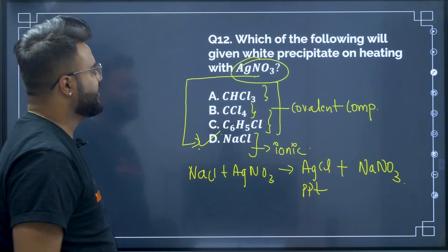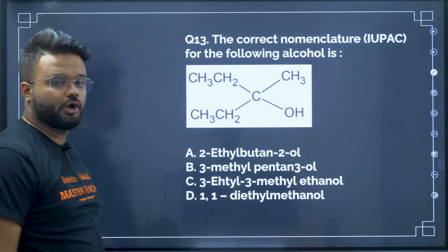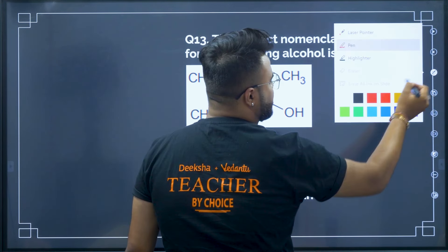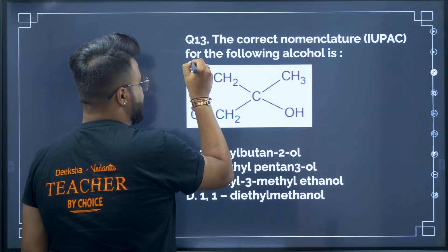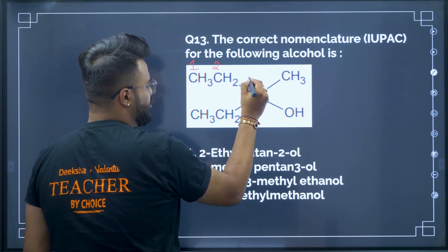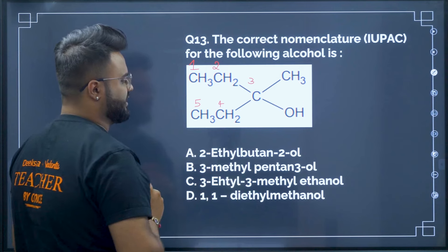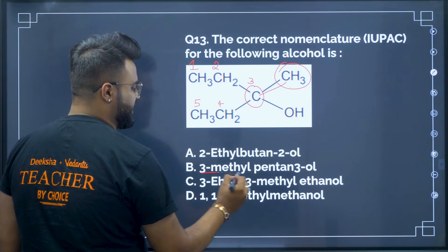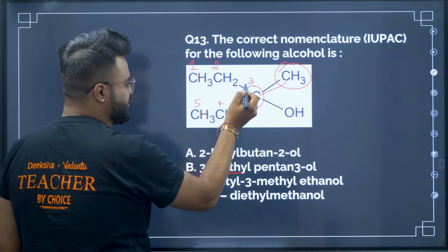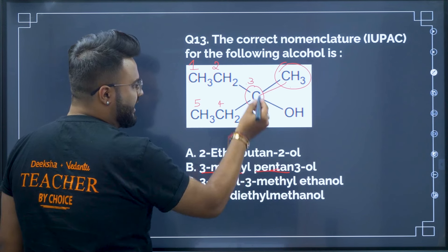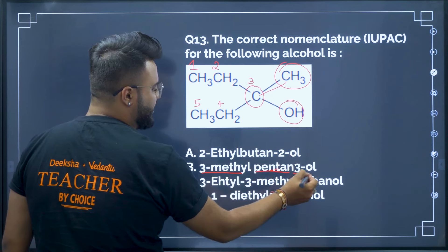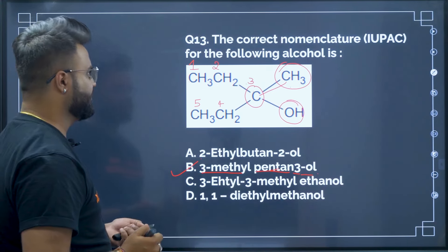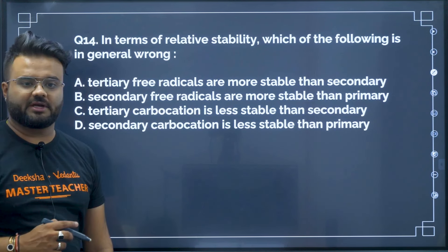Question 13: Find the correct IUPAC nomenclature for the given alcohol. Numbering the carbon chain: 1, 2, 3, 4, 5 — it is a pentane chain. At position 3 there is a methyl group and an OH group. So the name is 3-methylpentan-3-ol. All bonds are single, so 'pentane', and the OH makes it 'pentanol'. Therefore option B is your correct answer.